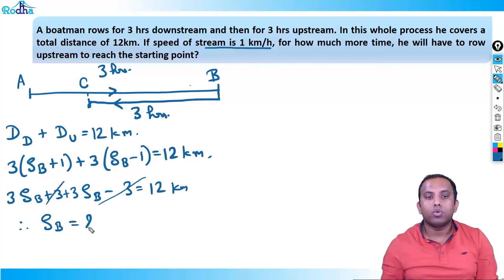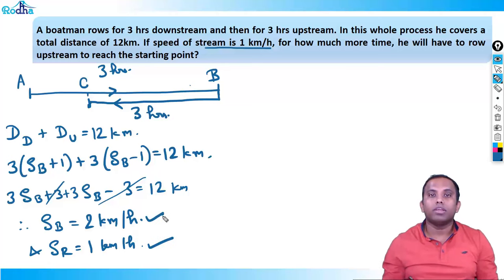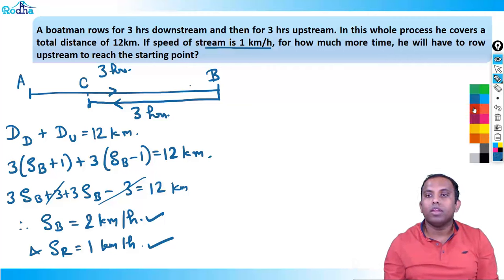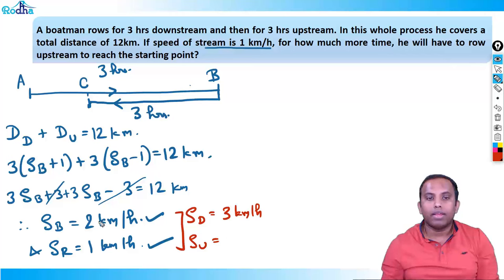Therefore SB equals 2 km per hour, and SR is already given as 1 km per hour. That means the speed of the current is 1 km per hour and speed of boat in still water is 2 km per hour. So downstream speed SD becomes 2 + 1 = 3 km per hour, and upstream speed SU becomes 2 − 1 = 1 km per hour.